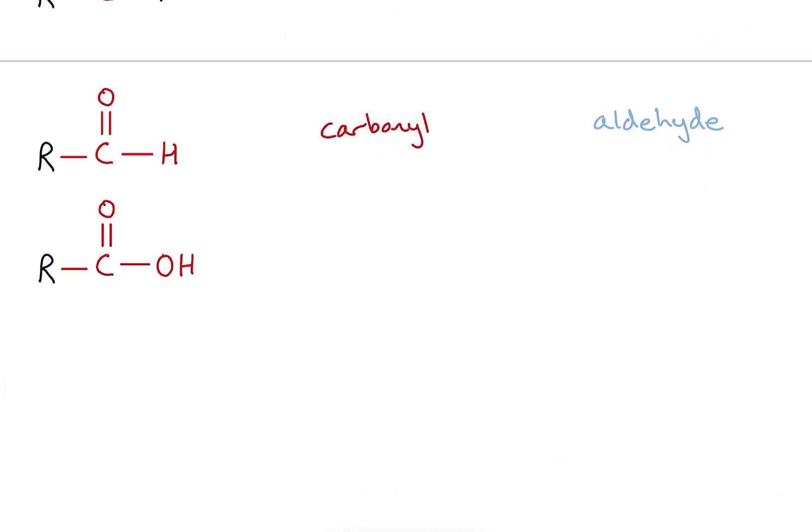Next, we have something that looks a little bit similar to the above, except my chain doesn't end with a hydrogen — it ends with an oxygen and a hydrogen. This is similar to a carbonyl functional group, but with an extra oxygen in there. The functional group is known as the carboxyl functional group, and it belongs to the class of carboxylic acids.